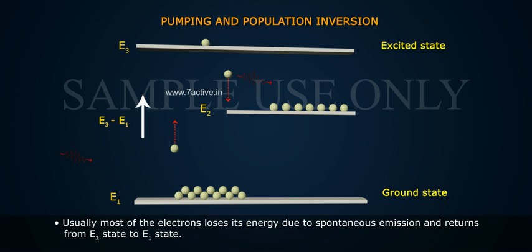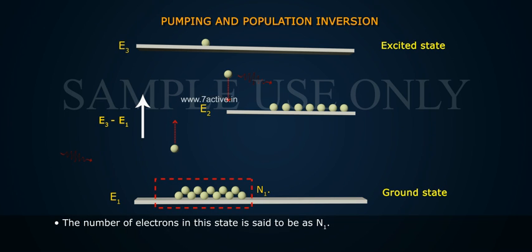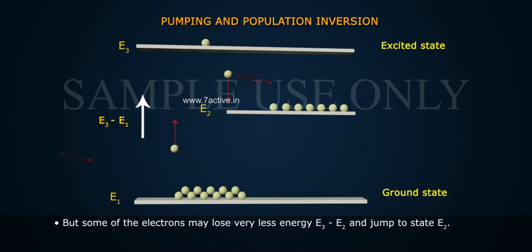Usually, most of the electrons loses its energy due to spontaneous emission and returns from E3 state to E1 state. The number of electrons in this state is said to be as N1. But some of the electrons may lose very less energy, E3 minus E2, and jump to state E2.